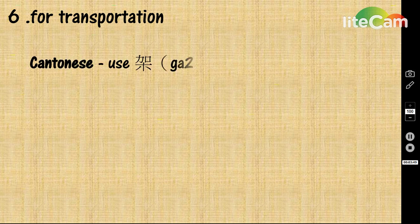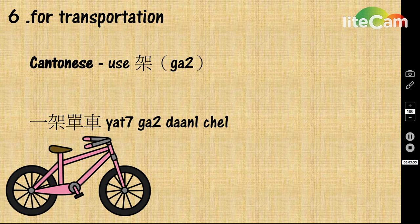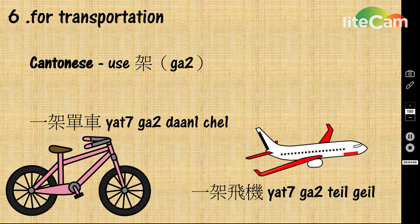For transportation, we usually use 架 as the quantifier. 一架單車 means a bike or a bicycle. 一架飛機 means an airplane.